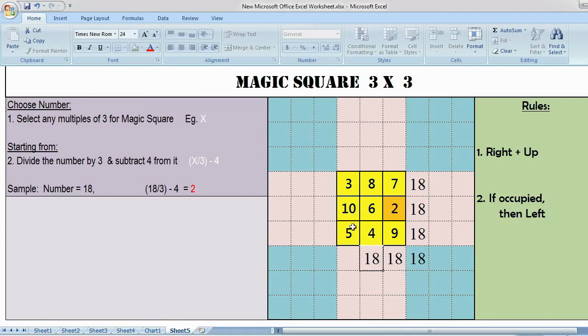10 plus 5, 15, plus 3, 18. 7 plus 6 plus 5, again 18. So if you see everywhere we are getting the number 18.